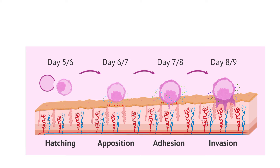On day 10, the blastocyst gradually embeds deeper and the defect in the endometrial epithelium is filled by a closing plug, which is gradually repaired. Maternal blood-filled lacunae appear in the syncytiotrophoblast, establishing primitive nourishment of the placental circulation.